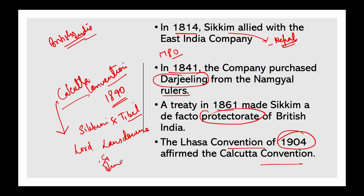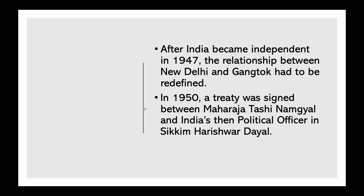After India became independent in 1947, a new relationship had to be defined between New Delhi and Gangtok. In 1950, a treaty was signed between Maharaja Tashi Namgyal and India's then Political Officer for Sikkim, Harishwar Dayal. The treaty encapsulated that Sikkim shall continue to be a protectorate of India and shall enjoy autonomy in regard to its internal affairs.